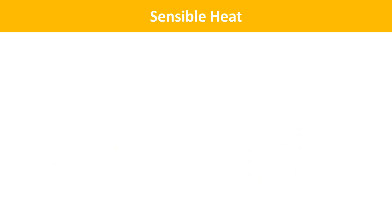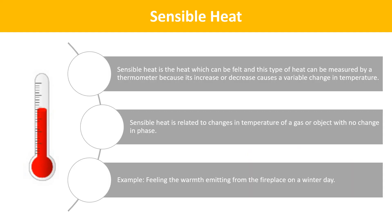The next term is Sensible Heat. Sensible heat is the heat which can be felt, and this type of heat can be measured by a thermometer because its increase or decrease causes a variable change in temperature. Sensible heat is related to changes in temperature of a gas or object with no change in phase. Example: feeling the warmth emitting from a fireplace on a winter day.